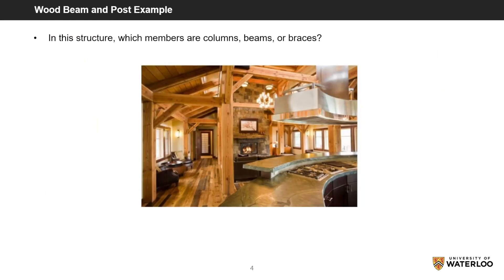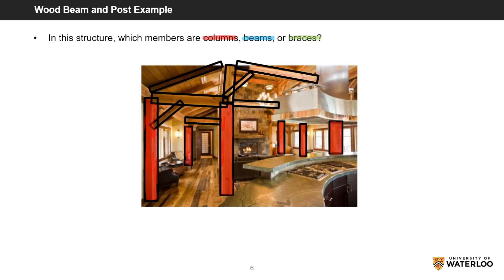In the picture below, try to determine which members are columns, beams, and braces. These vertical members highlighted red are the columns, which carry forces by compression. The blue horizontal members are the beams — recall that they carry forces by bending. And finally, the green additional supports are the braces, which carry forces by both tension and compression.